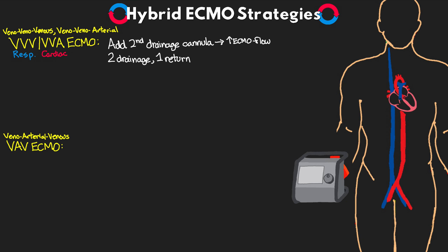To get to VVV ECMO we typically transition from VV ECMO, adding another drainage cannula to allow greater flow while still providing respiratory support. Another reason we might add a drainage cannula is if we're having a recirculation problem, which can occur at higher flows with a two-cannula configuration — something I discussed in the last lesson on VV versus VA ECMO. We would typically try turning down flows first, or repositioning the cannulas, but if the patient isn't tolerating that or we're still having significant recirculation, inserting another drainage cannula in a different location can help reduce recirculation.